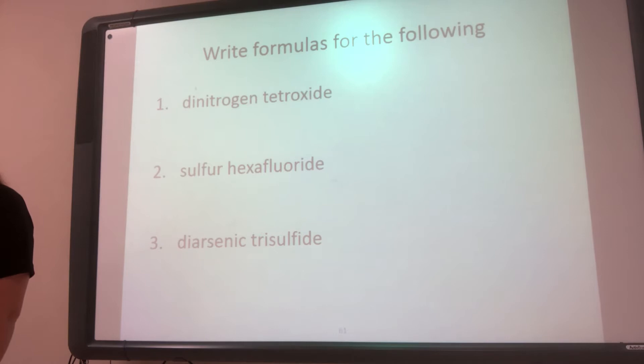Dinitrogen tetroxide. So I see I've got two prefixes. And then here are my elements. The first one's nitrogen, symbol is N. The prefix is di. Di stands for two, so that's my subscript. The next element is oxide, which is short for oxygen. That symbol is O. Tetra, because right now it doesn't have the A, because we dropped the A, because this is an O. And tetra's prefix is four. So it's N2O4. Do not reduce. You leave it exactly as what it says.